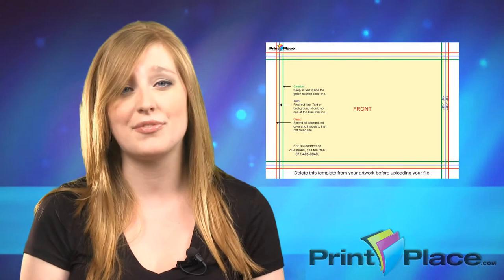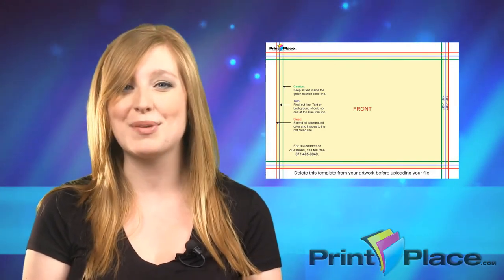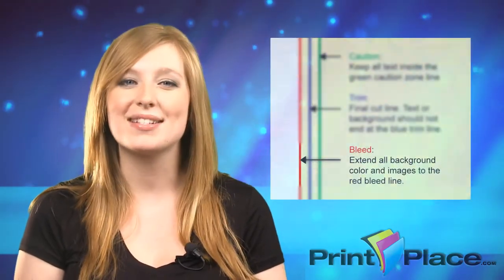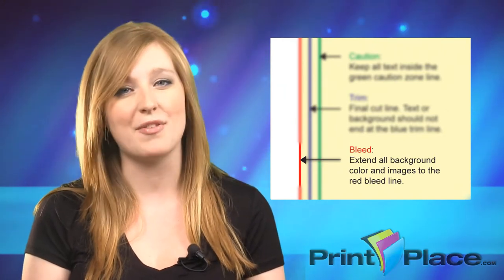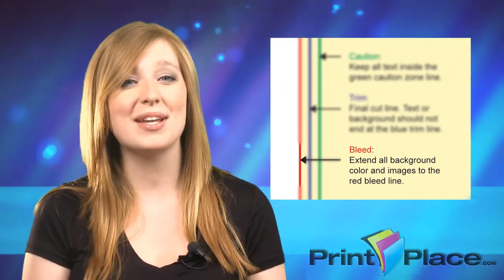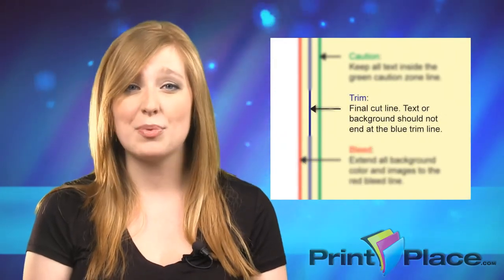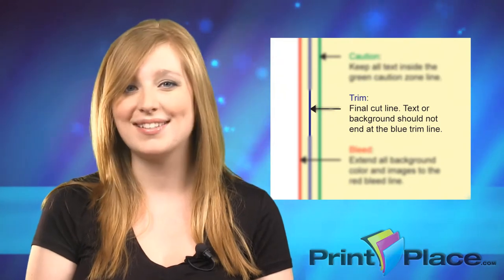Trim and bleed are represented as colored lines along the border of your artwork. You can download templates with bleed and trim guides from any product page on PrintPlace.com. Bleed is artwork such as background colors or images that extend farther than the trim edge of a print document — represented by the red line. Trim is the final size of your print product after it's been cut, represented by the blue line.